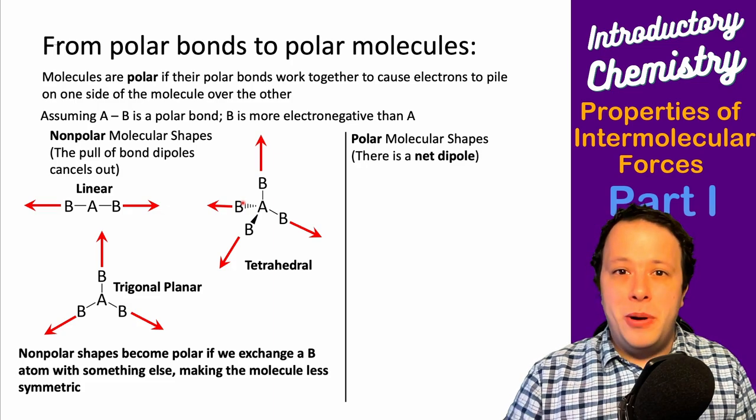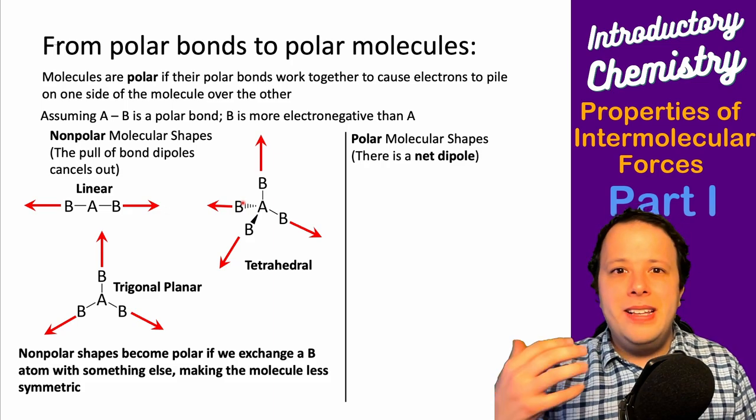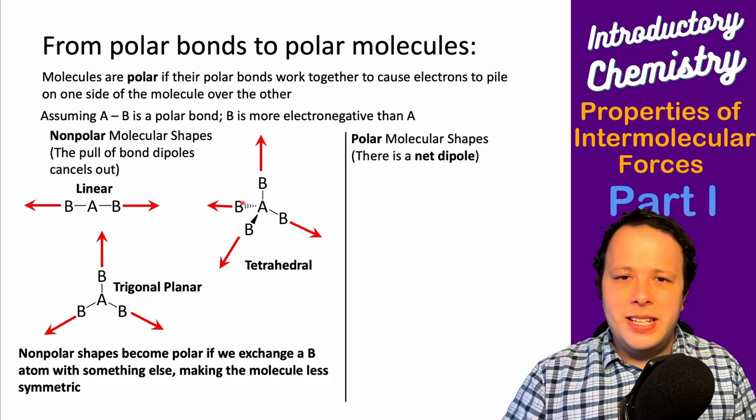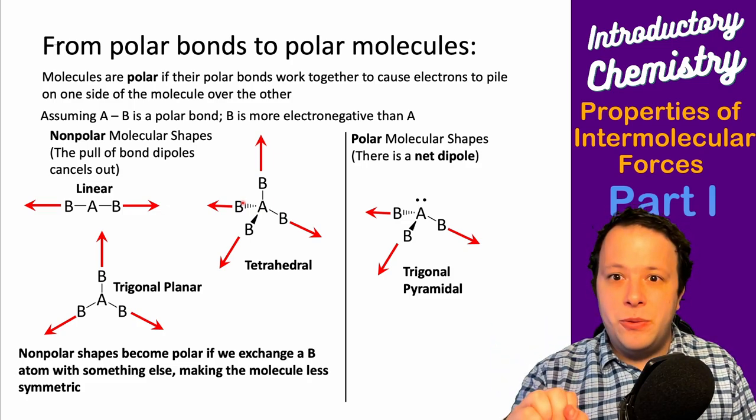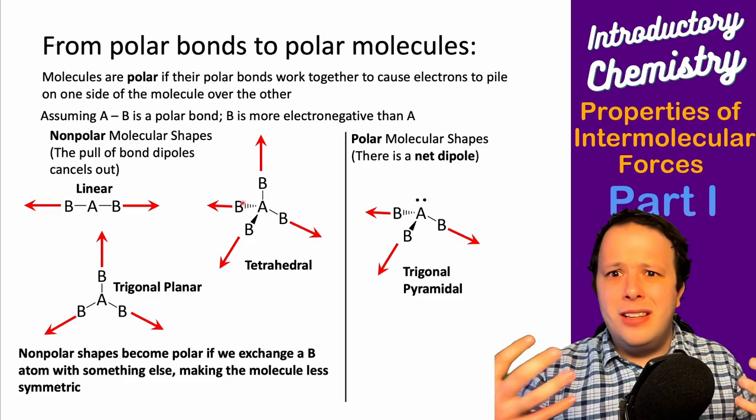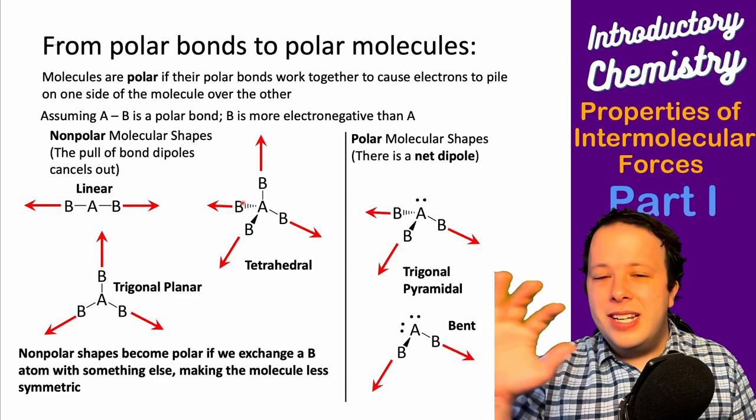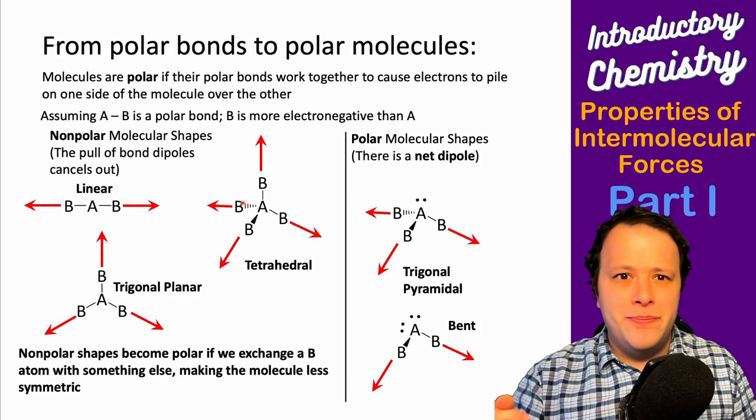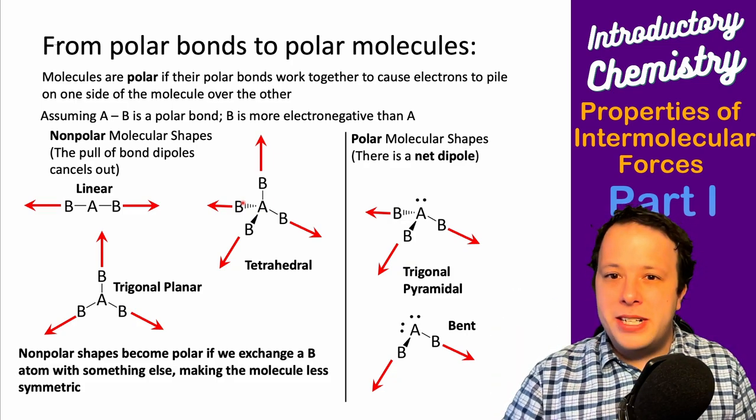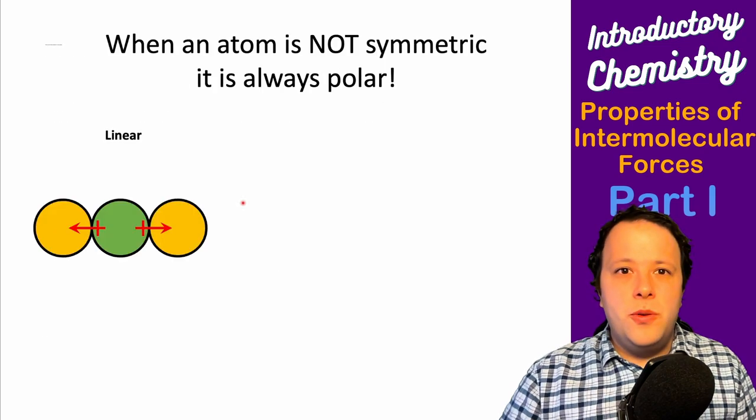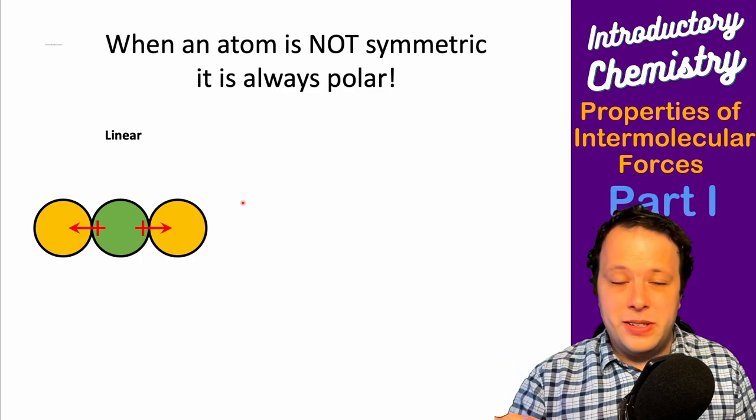Non-polar molecules have to all be symmetric with the same atom. For it to be polar, there has to be some kind of net dipole across the molecule, meaning uneven sharing of electrons. If I have a lone pair, that's a good way to see this uneven nature. Lone pairs are very electronegative. If you see a lone pair, it's generally polar. When an atom is not symmetric, it is always polar.